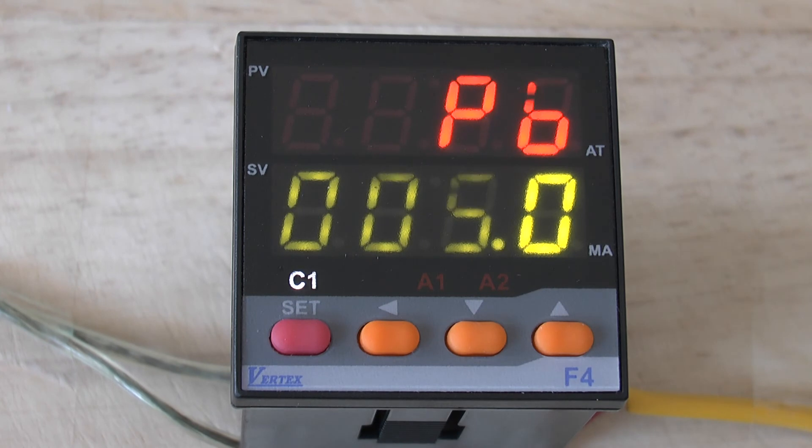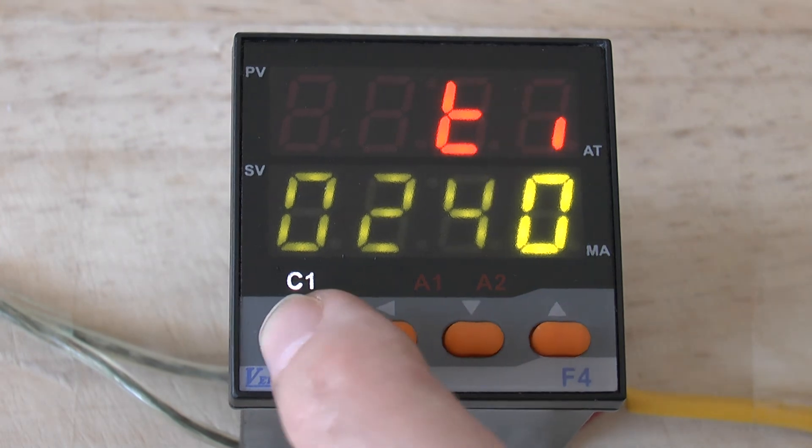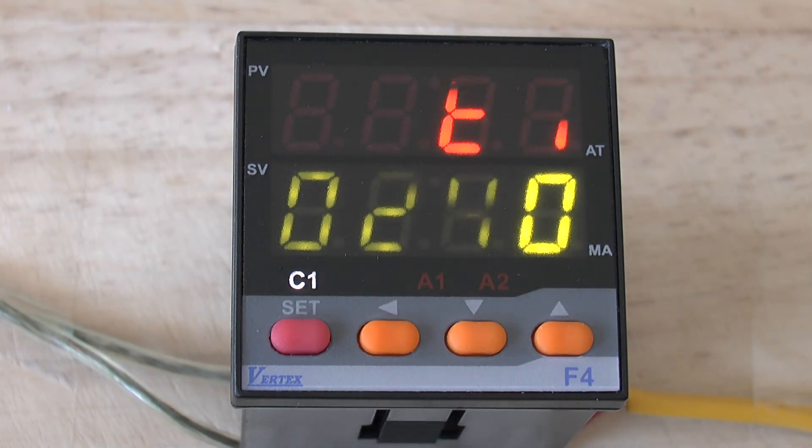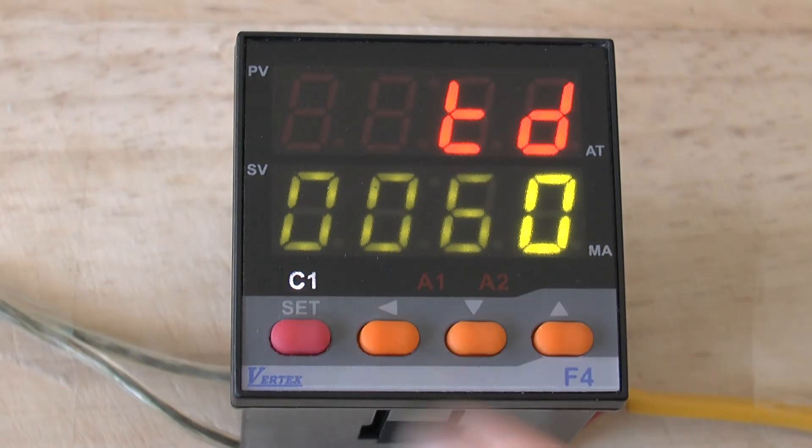The first parameter is the PB, which is the proportional band. The next parameter is the TI or integral parameter. The next parameter is the TD or derivative parameter.